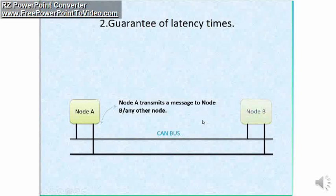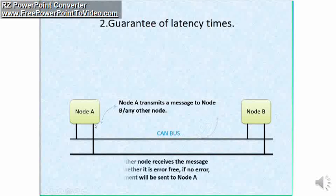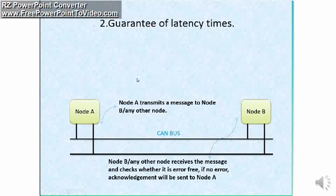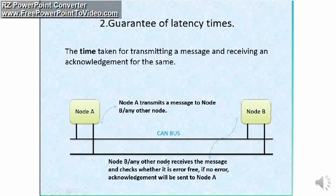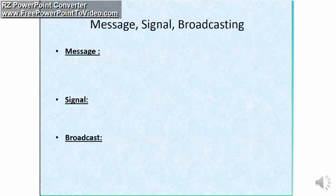Suppose node A is going to send its message to node B. So node A transmits the message. So what will the receiver do? The receiver will check the received message from node A whether it is error free or not. If it is error free, node B will send acknowledgement to node A. So here the time consumed for this complete process is defined as guarantee of latency times in the CAN network.